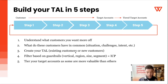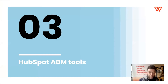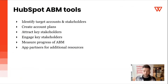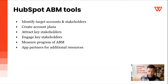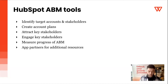Let's move on to the HubSpot part. When you follow these five steps, you'll have your target account list — but then the question is, how do I manage and engage with it? That's where HubSpot comes into play. HubSpot has specific ABM tools where you can identify target accounts and stakeholders, create specific account plans, attract key stakeholders, engage with them, measure your progress, and if you need additional resources, use their marketplace with application partners.